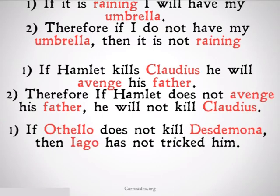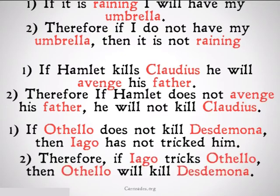If Othello does not kill Desdemona, then Iago has not tricked him. Therefore, if Iago tricks Othello, then Othello will kill Desdemona. Note that what we're doing is we're switching the two parts of the implication, and we're negating not one, but both of them.